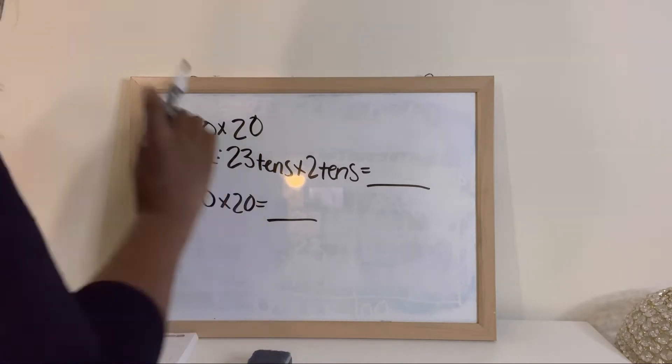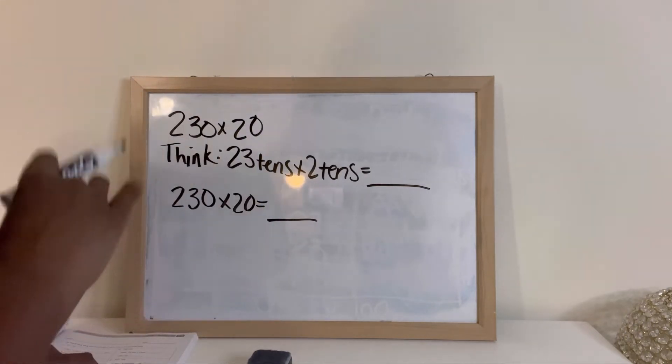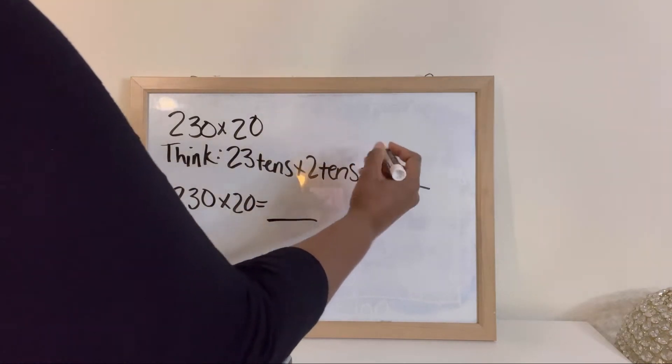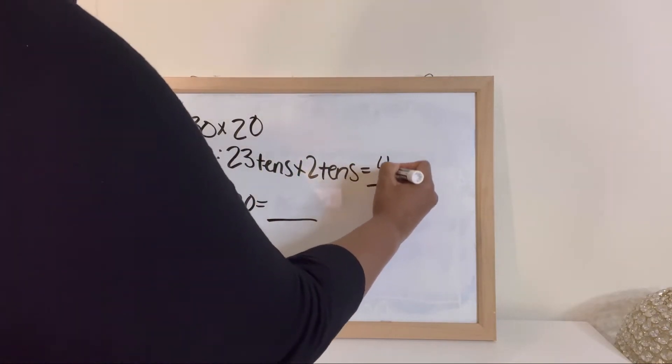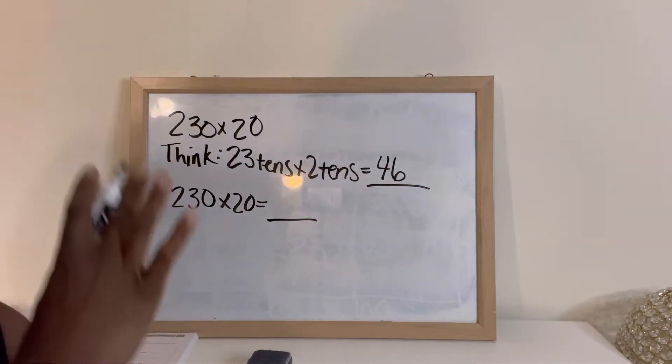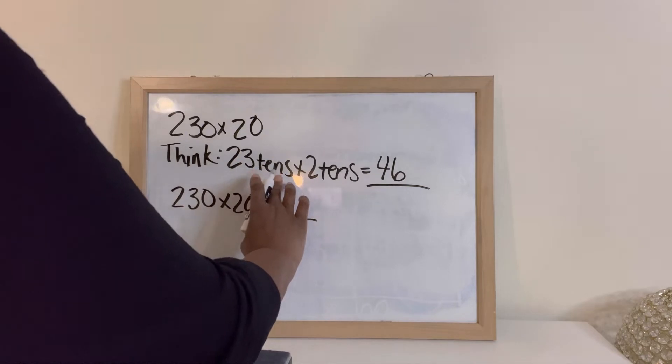So again, in our previous problem, we found out that 23 times 2 is 46. And then we need to figure out if I'm multiplying tens times tens.